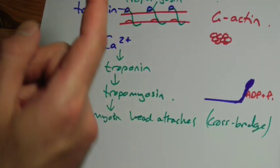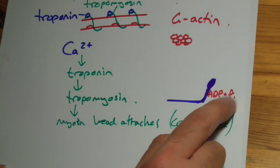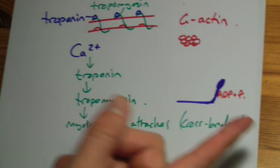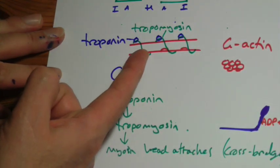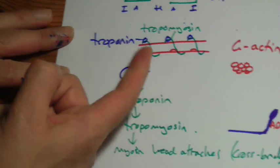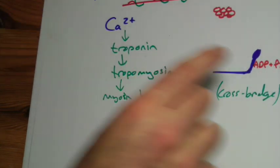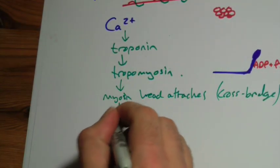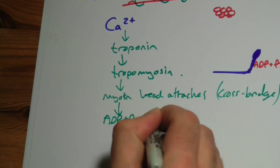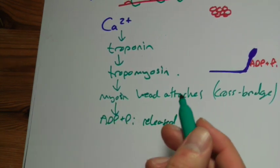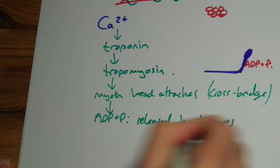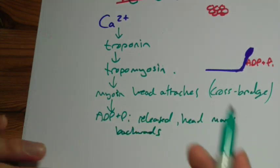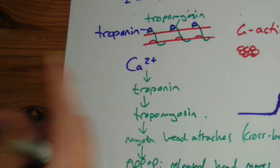As it attaches, the ADP and phosphate, inorganic phosphate group are released. Now, as that's released, it causes it, so it's bound on, as the ADP and phosphate is released, it causes it to change its shape. Because it's attached, what it will do is it will pull the whole thing along. So the ADP is released. ADP, inorganic phosphate, released. And the so-called power stroke is when the head moves backwards. Because it's attached, it will take the entire actin molecule with it. So there's the power stroke.